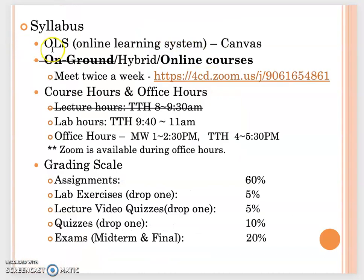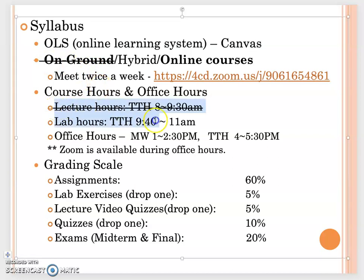This class originally was on-ground and we met twice a week, but now because of the pandemic situation we have fully moved the course online. In order to help you learn fully, just like you would in the on-ground class, we will have twice-a-week Zoom meetings. When we had the on-ground class, we met twice a week for a three-hour class: the first one and a half hours I would lecture, and the second half we would do the lab.